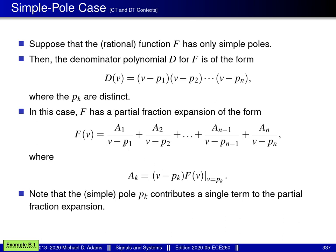In other words, the pole at p1 contributes a single term, which is the first term; the pole at p2 contributes a single term, which is the second term, and so on up to the pole pn. At this point, I'd like to consider an example of computing a partial fraction expansion for the simple pole case. In particular, I'd like to consider example B.1.